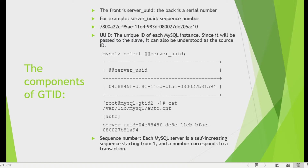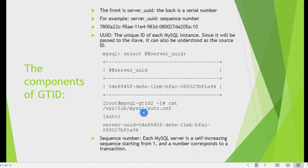A GTID has two parts: the server UUID and a sequence number. For example, a value like '7...5a:10' — everything combined is called a GTID. The first part is the server UUID, which is always unique to each server and can be found using SELECT @@server_uuid or inside the auto.cnf file in the MySQL data directory. The sequence number is also unique, which is why every GTID is unique.